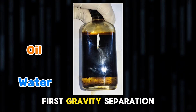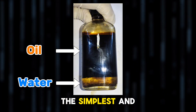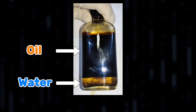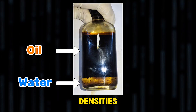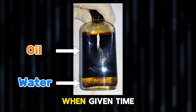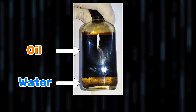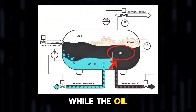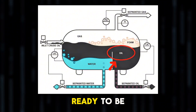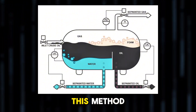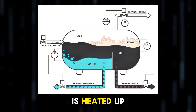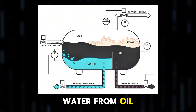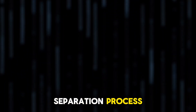First, gravity separation. The simplest and most common method is gravity separation. Since oil and water have different densities, they naturally separate when given time. In large separator tanks, the water settles at the bottom while the oil floats to the top, ready to be skimmed off. In this method, crude oil is sometimes heated to help accelerate the separation of water from oil.